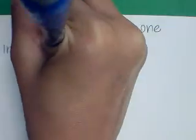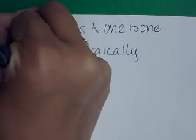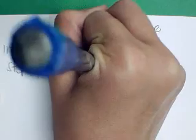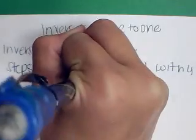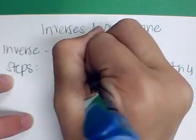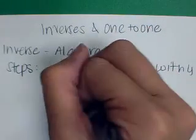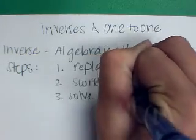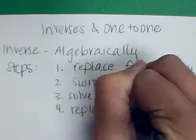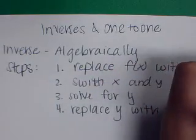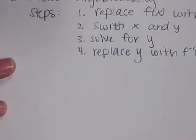To find the inverse algebraically, there are four steps. Step number one is to replace f of x with y. Step number two is to switch x and y. Step number three is to solve for y. And step number four is to replace y with f inverse of x. That's just a notational thing, that f to the negative one power of x means f inverse. Let's look over some examples.